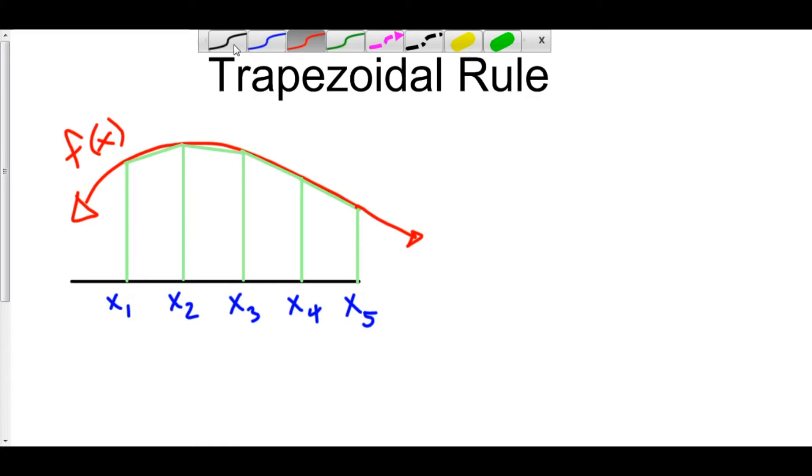Now keep in mind that the area of a trapezoid is the height divided by 2 times your first base plus the second base of the trapezoid.